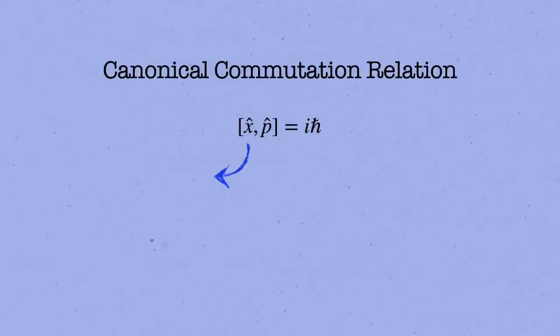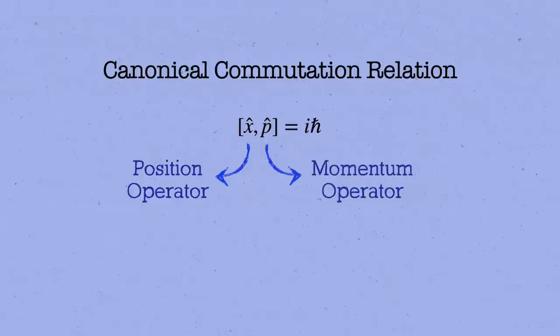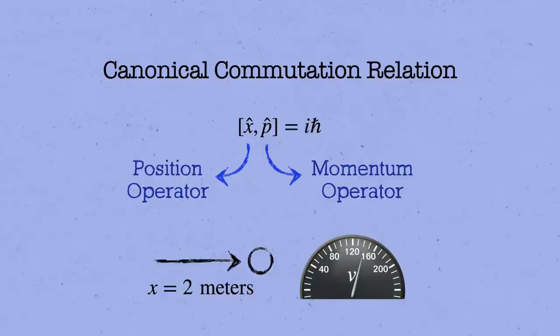The canonical commutation relation between the position operator and momentum operator is one of the most fundamental equations of quantum mechanics. It's what implies that you can't precisely measure the position of a particle and its speed at the same time. But where does it really come from?